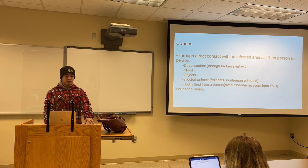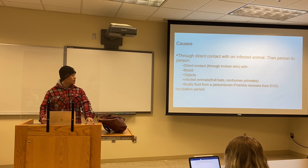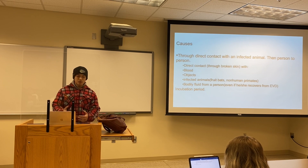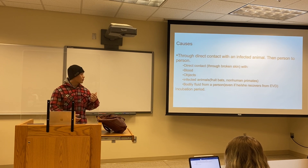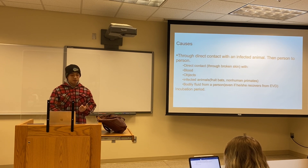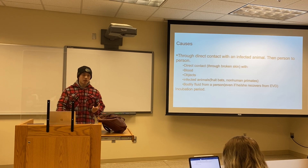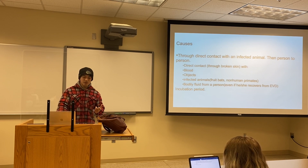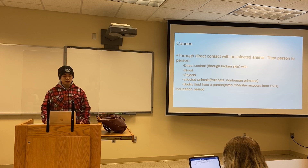The causes of Ebola virus transmission include direct skin contact or contact with an infected animal, or even person-to-person contact with an infected person. So it can go from animal to person, and from person to person. It can spread through direct contact with blood from an infected person, contaminated objects such as needles or clothing with blood on it, infected animals such as fruit bats and non-human primates, and also bodily fluids from a person — even if he or she has recovered from Ebola virus disease.